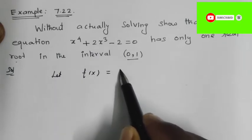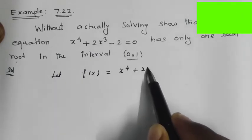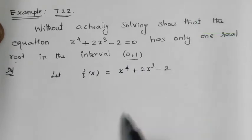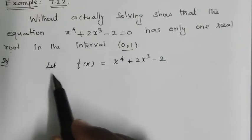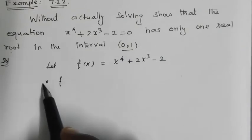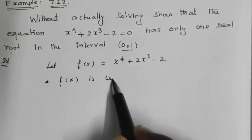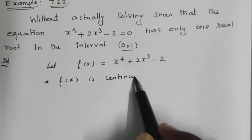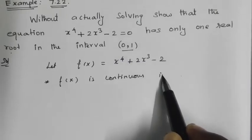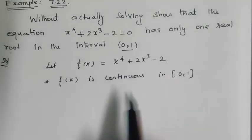Let f(x) = x⁴ + 2x³ - 2. This is a polynomial. Since the polynomial is continuous, f(x) is continuous in the closed interval [0, 1].